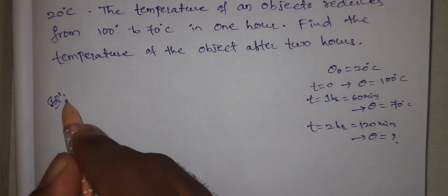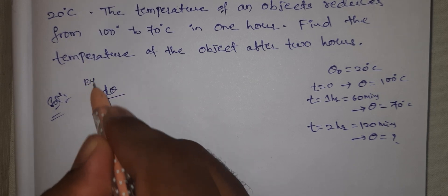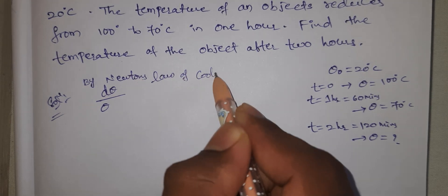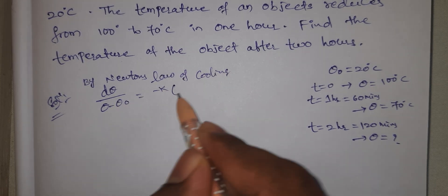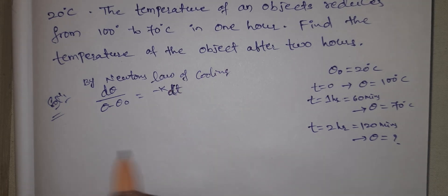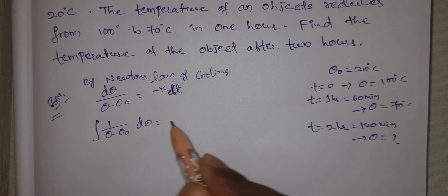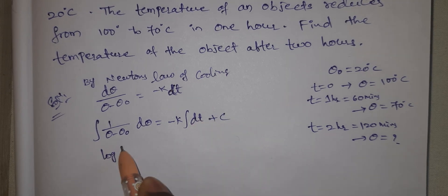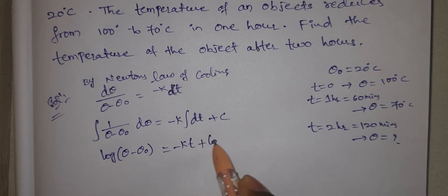Solution: By Newton's law of cooling, dθ by dt equals minus k into theta minus theta naught. Rearranging: 1 by (θ minus θ₀) dθ equals minus k dt. Integrating both sides: integral of 1 by (θ minus θ₀) dθ equals minus k integral dt plus c.